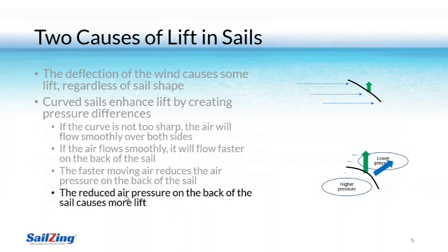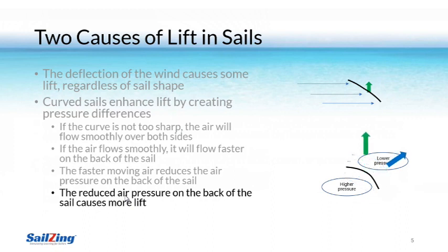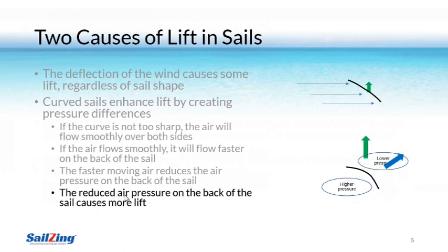The difference in pressure between the front and the back of the sail causes lift, greatly enhancing the overall lift and explaining why we can go fast in a sailboat. The actual direction of the lift is toward the blue arrow, but a lot of that lift helps the boat go forward in the direction of the green arrow. The rest of the lift causes the boat to heel.